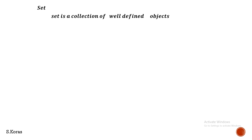First, let's see the definition of a set. A set is a collection of well-defined objects. The word 'well-defined' should be noted very carefully, because we can collect things whatever we know, but they must be well-defined. Let me show you some examples.